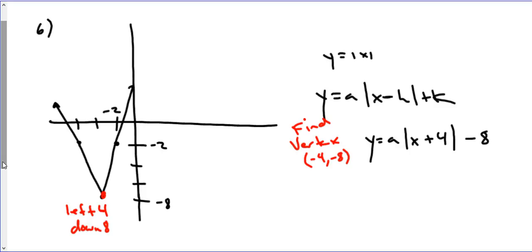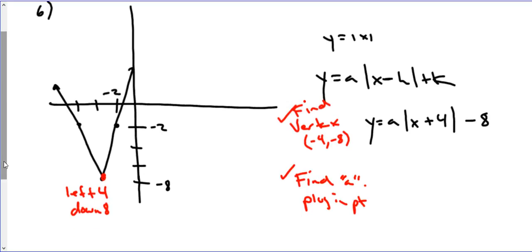Once we have that, we now need to find another point to figure out the A value. What other points do we have here? It appears we have another point at negative 2, negative 2. So I'm going to use that point. Plug in negative 2 for Y.